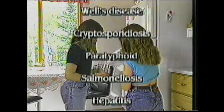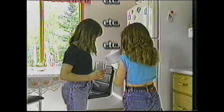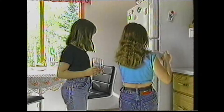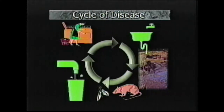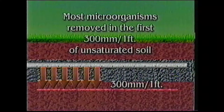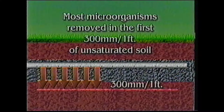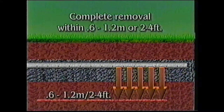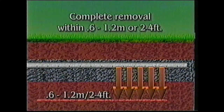The list is exhaustive and reads like a who's who of epidemics. Risks to human health arise through direct and indirect contact with sewage. The cycle of disease represents how disease is spread, and also how it can be prevented. In-ground systems break this cycle by removing most of the disease-causing microorganisms in the first 300 millimeters or one foot of unsaturated soil, with almost complete removal accomplished within 0.6 to 1.2 meters, or two to four feet from the soil absorption system bottom. This is a vital step in the process which protects groundwater.